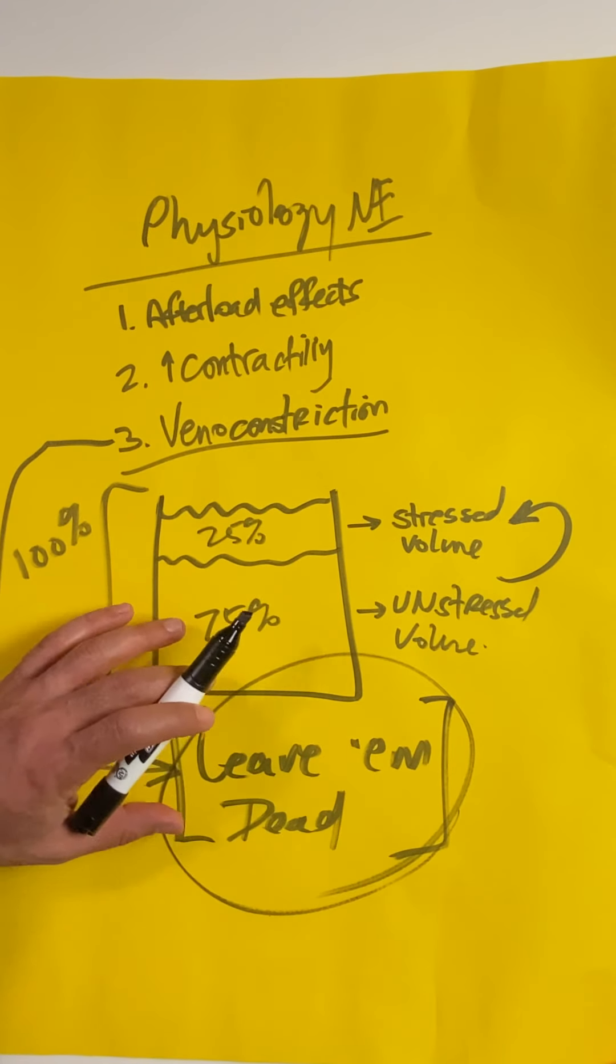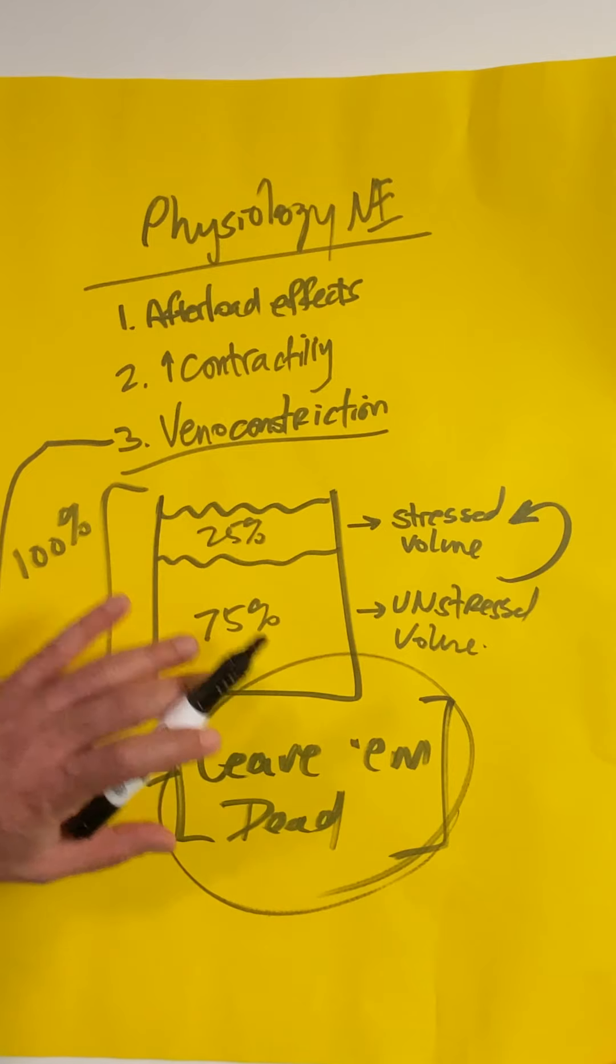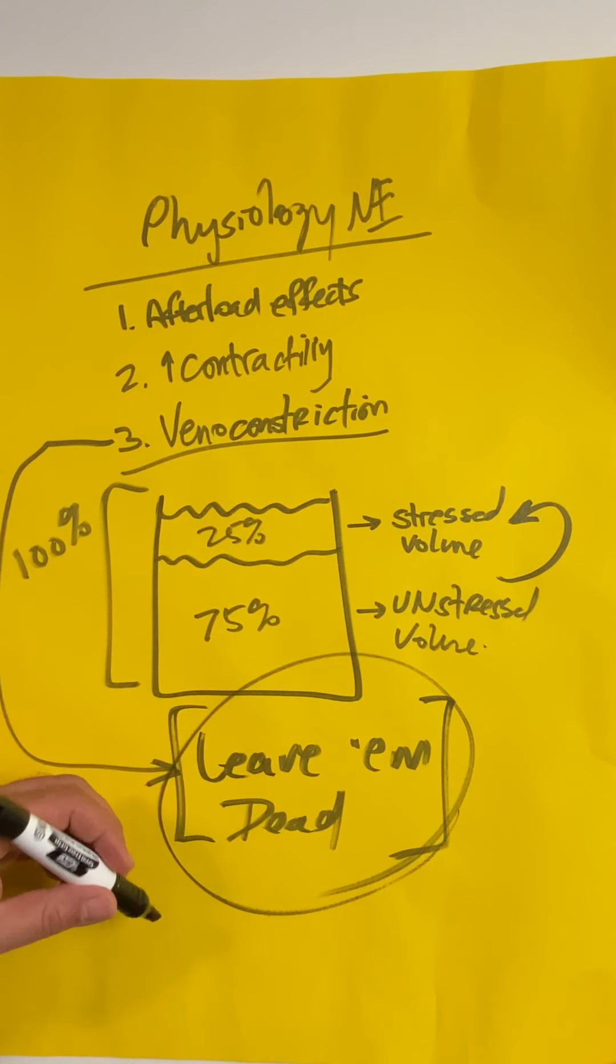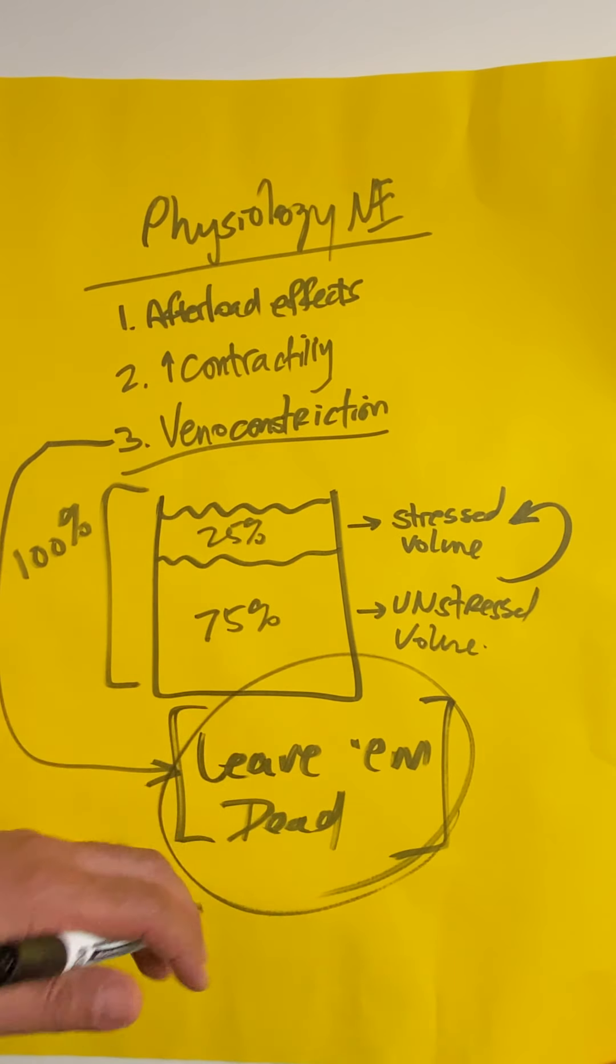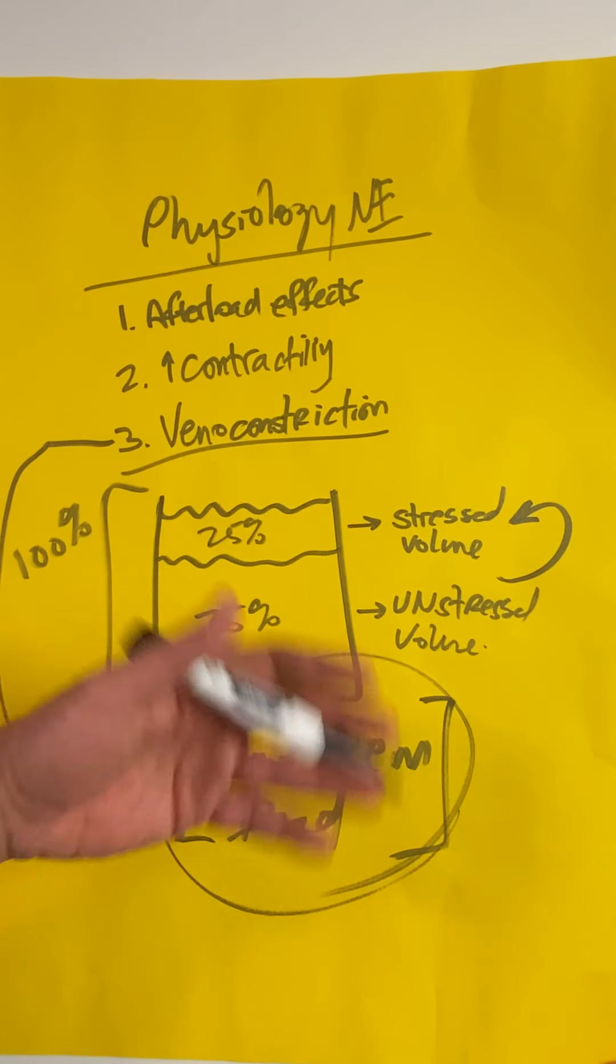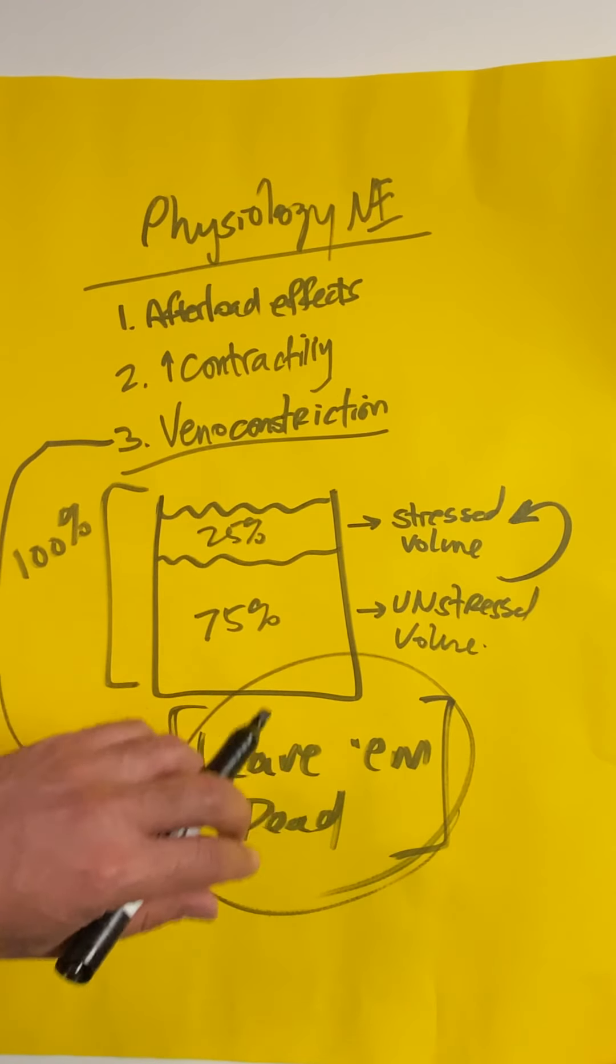But now that we're doing good resuscitation and have a much better handle on the physiologic situation than we did years ago, I don't think we should be calling it 'leave 'em dead.' We should be using norepinephrine instead of large amounts of crystalloid and instead of the other vasopressors. So remember, it's not 'leave 'em dead'—I like the term 'use it instead.'